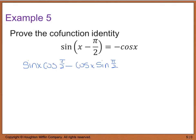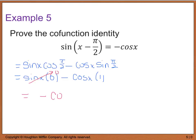minus the cosine of x times the sine of pi over 2. When we simplify, we have sine of x times 0 — since cosine of pi over 2 is 0 — minus cosine of x times 1, since sine of pi over 2 is 1. The first term becomes 0, and we're left with negative cosine of x.